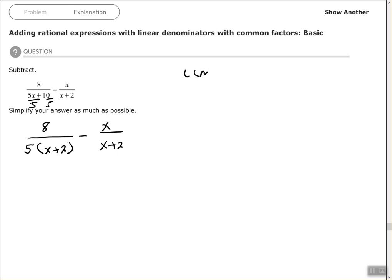So I have 5 times x plus 2 and I have x plus 2. The least common multiple would include all of my factors, so I need a 5.